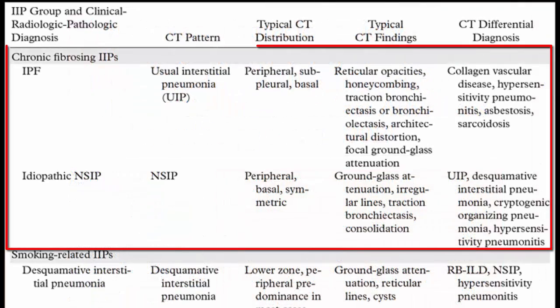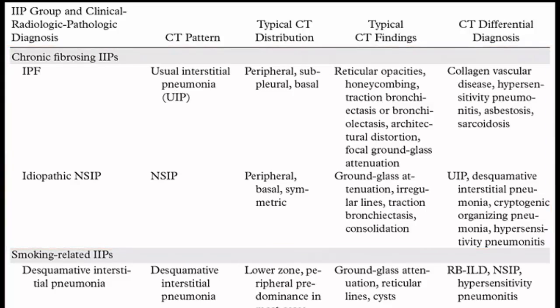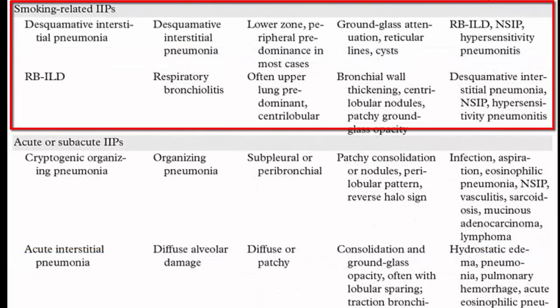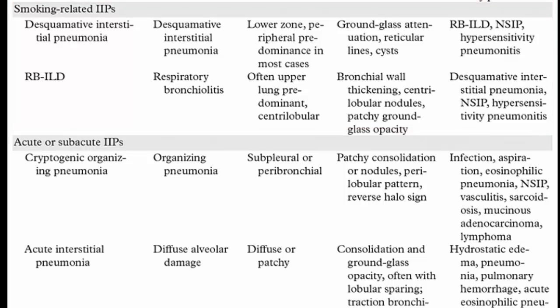The first group is chronic fibrosing idiopathic interstitial pneumonia, to include idiopathic pulmonary fibrosis and nonspecific interstitial pneumonia. The second group is smoking-related idiopathic interstitial pneumonias, including respiratory bronchiolitis with associated interstitial lung disease and desquamative interstitial pneumonia.